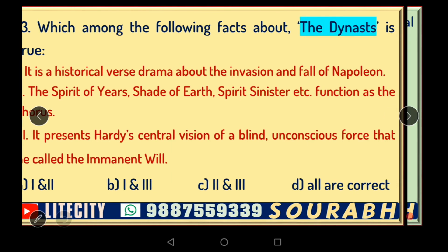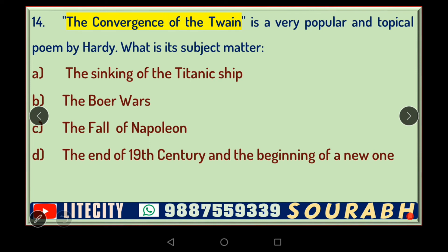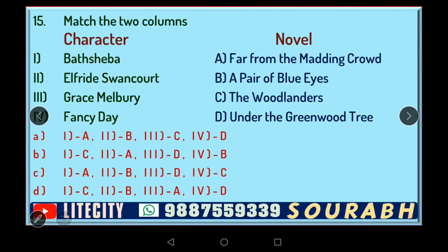'The Convergence of the Twain' is a very popular and topical poem by Hardy. What is its subject matter? Options: A) the sinking of the Titanic, B) the fall of Napoleon, C) the end of the 19th century and beginning of a new one. Hardy has written poems on all these subjects, but this particular poem was written mourning the fate of the Titanic. This event inspired Hardy to write the poem in which he presented once again his philosophical view about the working of the world.